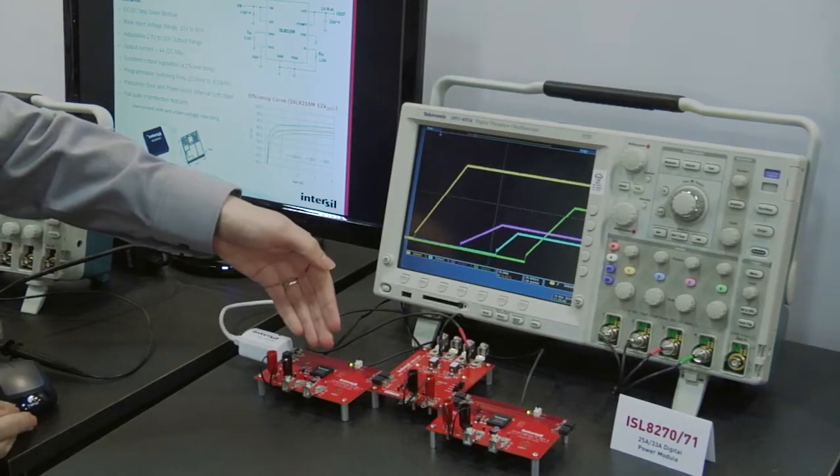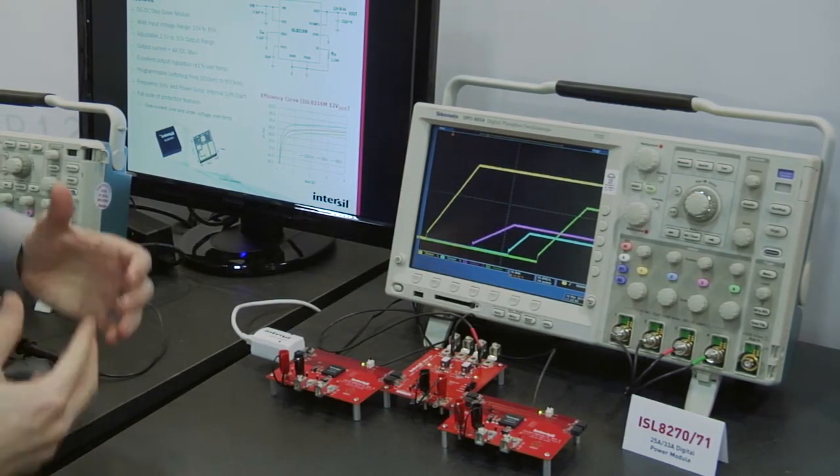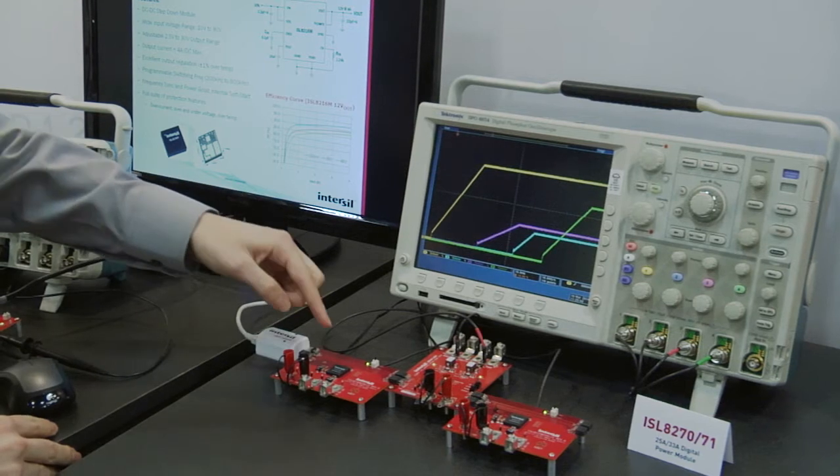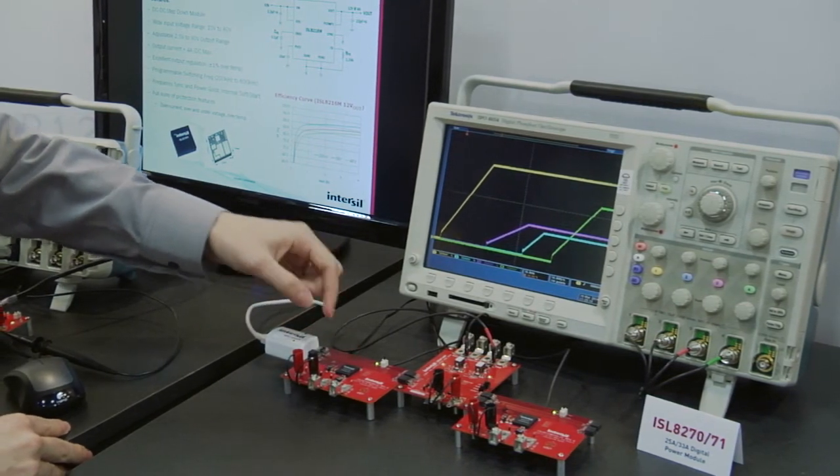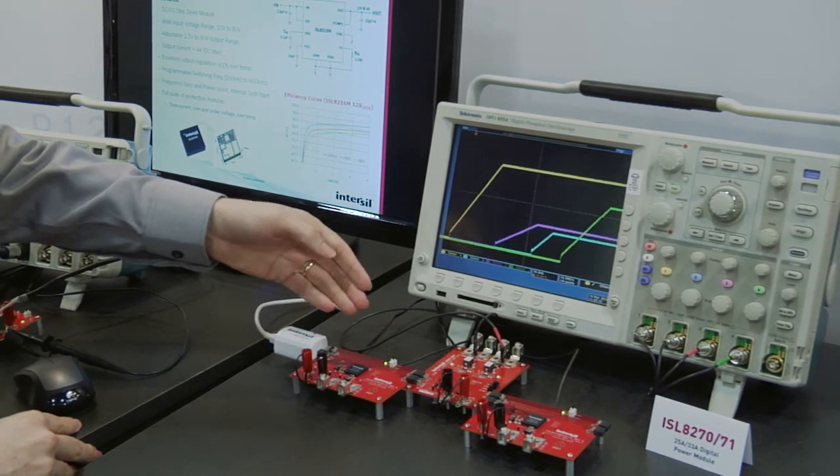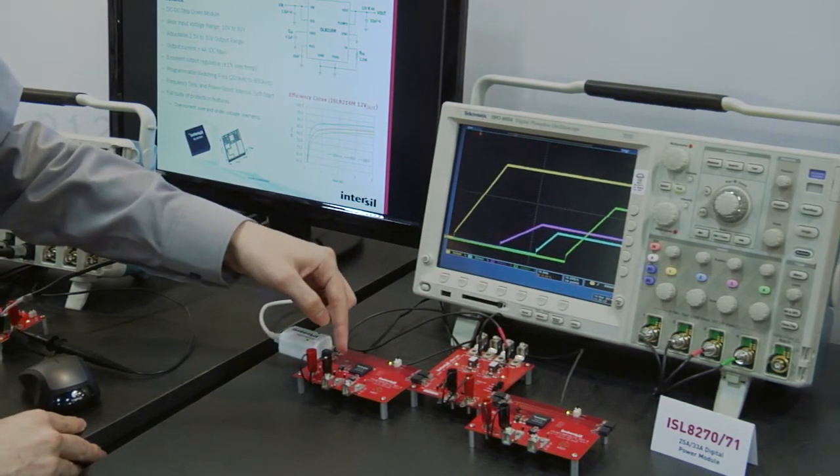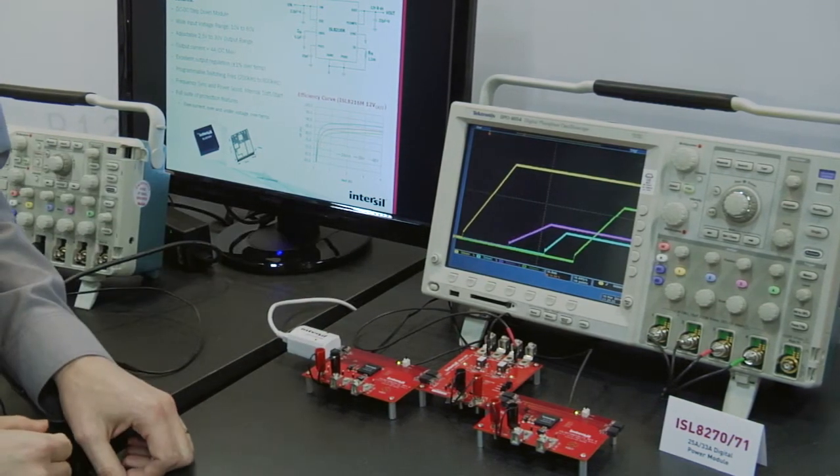So on the left here we have the ISL8270 which is a 25 amp digital power module. Within this device is incorporated the fourth-generation controller, the inductor, the drivers and the MOSFETs and all the small signal passives. So all you require is the input cap and the output cap and the IC and that completes your entire power supply.